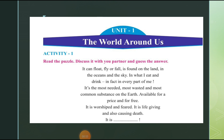Unit 1: The World Around Us. Activity 1 — there is a puzzle given here. Let us read it: 'It can float, fly, or fall. It is found on the earth, in the ocean, and the sky. In what I eat and drink — in fact in every part of me. It's the most needed, most wasted, and most common substance on the earth. Available for a price and for free. It is worshipped and feared. It is life-giving and also causing death.' Can you guess? Yes, it's water!